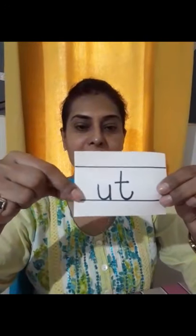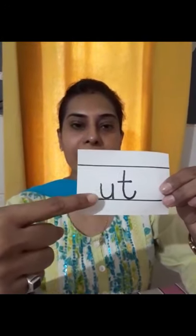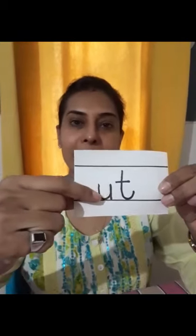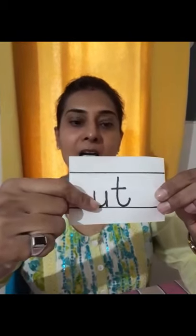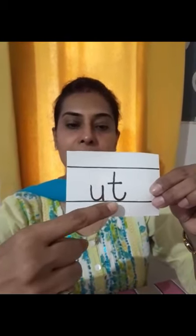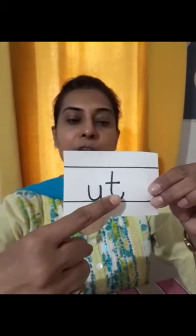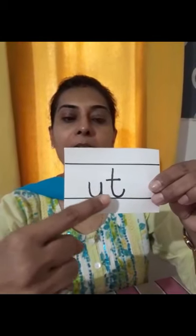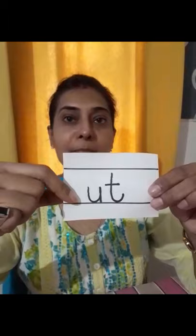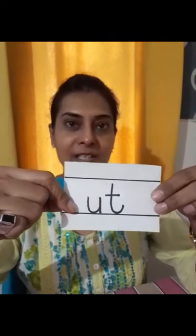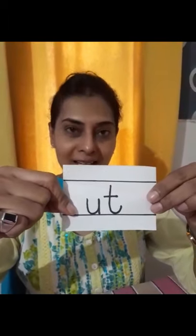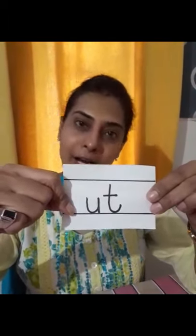Today we are going to do 'ut' family words. 'ut' — U says 'u', T says 't'. Together it becomes 'ut'. So today we are going to do 'ut' family words.